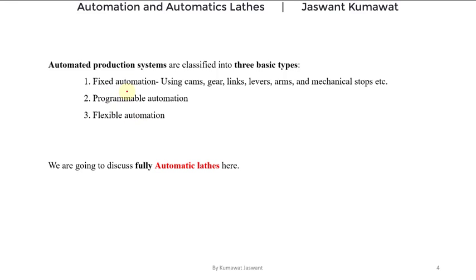Fixed automation refers to an automated production facility in which the sequence of processing operations is fixed by a configuration. This configuration is achieved using cams, gears, links, levers, arms, or mechanical stops — that is, the programmed commands are in the form of these mechanical elements. This type of automation is characterized by high initial investment and higher production rates, so it is suitable for products made in large quantities or large volume.